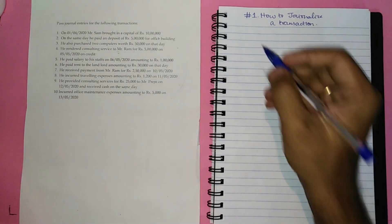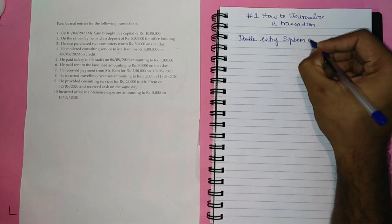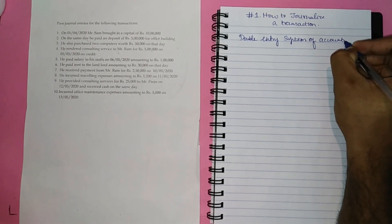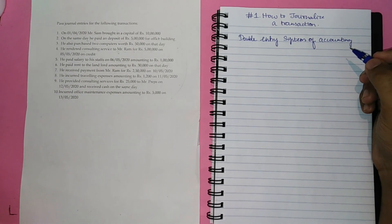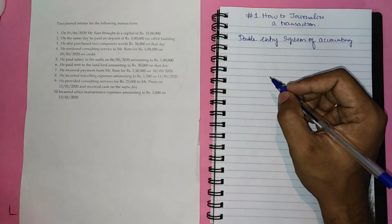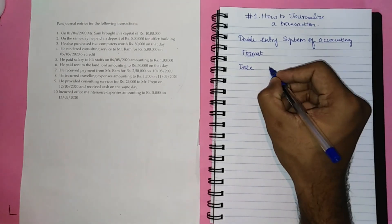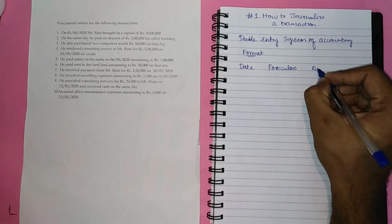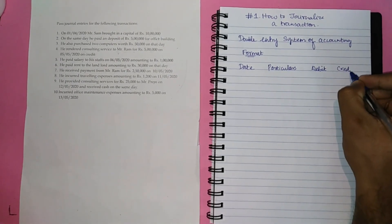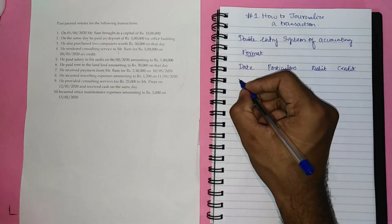We journalize the transaction based on the Double Entry System of Accounting. Here, every transaction will affect at least two account heads. First, let us look at the format of a journal entry. The format includes: Date, Particulars, Debit and Credit. So for a transaction, we will enter the journal entry as follows.